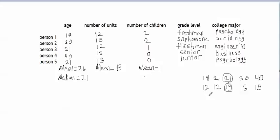Let's find the median of the number of children column. We put the values in order from lowest to highest and the middle value is 1, so the median is 1.